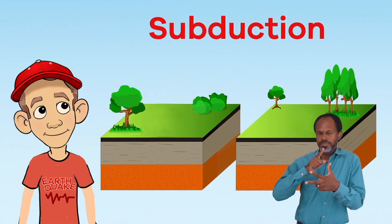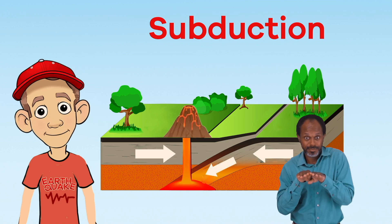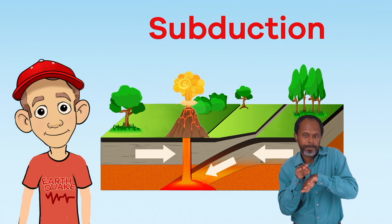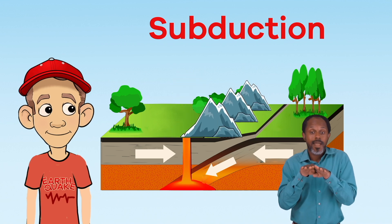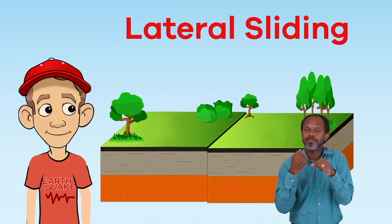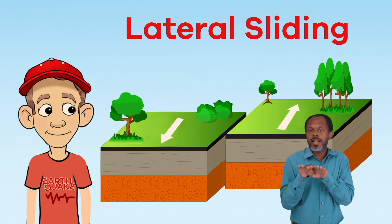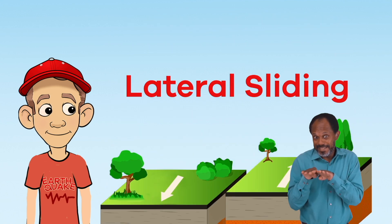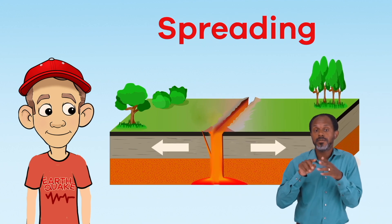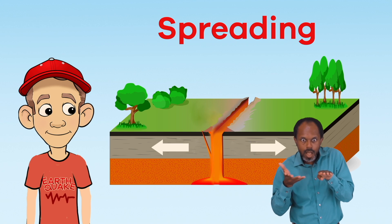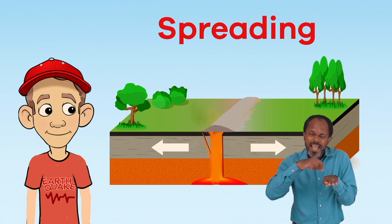Subduction happens when plates crash into each other. This can cause one plate to slide under another and be destroyed. Or, the edges of the plate may rise up and form mountains. Lateral sliding means that the plates slide alongside each other, which can create lots of friction. And spreading happens when plates move apart from each other. When they do, melted rock between the plates rises and cools, forming new crust.